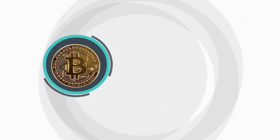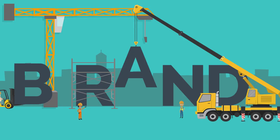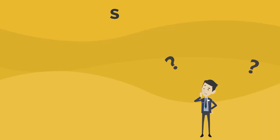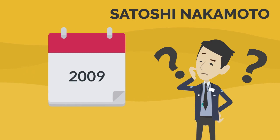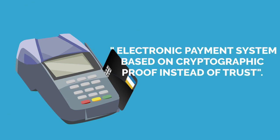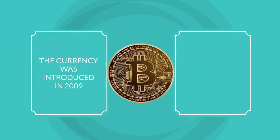Bitcoin holds the title of being the first cryptocurrency ever to exist. Bitcoin is the brand face of what cryptocurrency exactly is. Satoshi Nakamoto created it in 2009, originally described as the need for an electronic payment system based on cryptographic proof instead of trust. Even though the currency was introduced in 2009, it didn't take off until 2013.